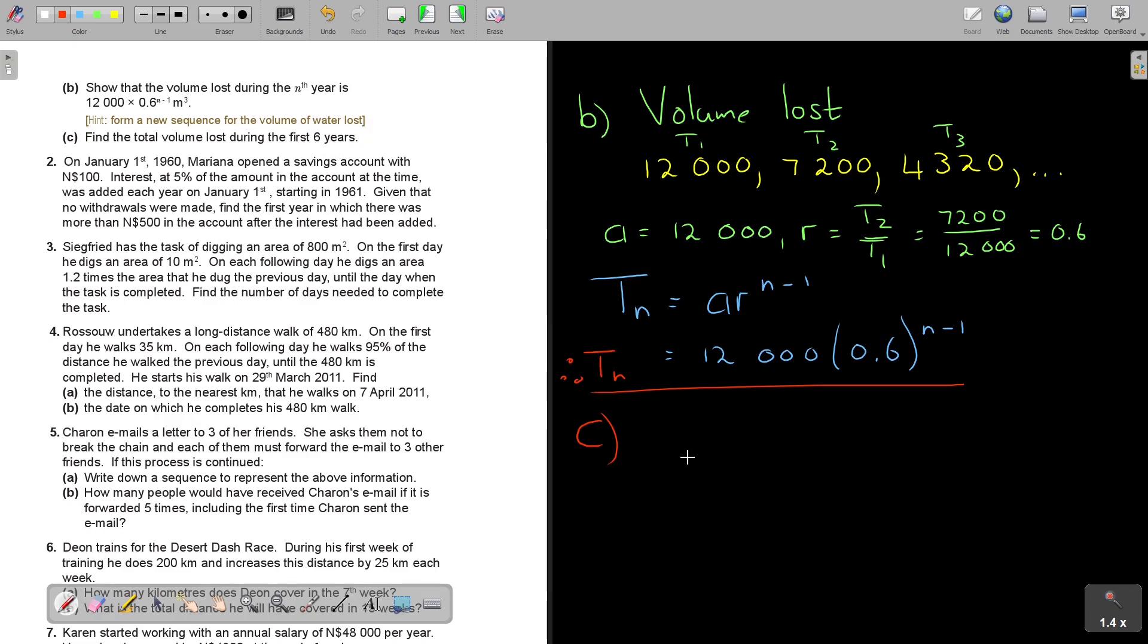Number C, find the total volume lost during the first six years. So then it's just my SN formula. The value of R is smaller than 1, so the 1 is in front. So it's A times 1 minus R to the power N over 1 minus R. And in the place of A I put the 12,000, then 1 minus 0.6, and how many years is it? 6. And then 1 minus 0.6. And then I press, now I prefer to first press the brackets. So I say 1 minus 0.6 close to the power 6 close, multiply 12, divide again. If you want 0.4 or bracket 1 minus 0.6 close, and correct to 3 significant figures I'm getting 28,600.